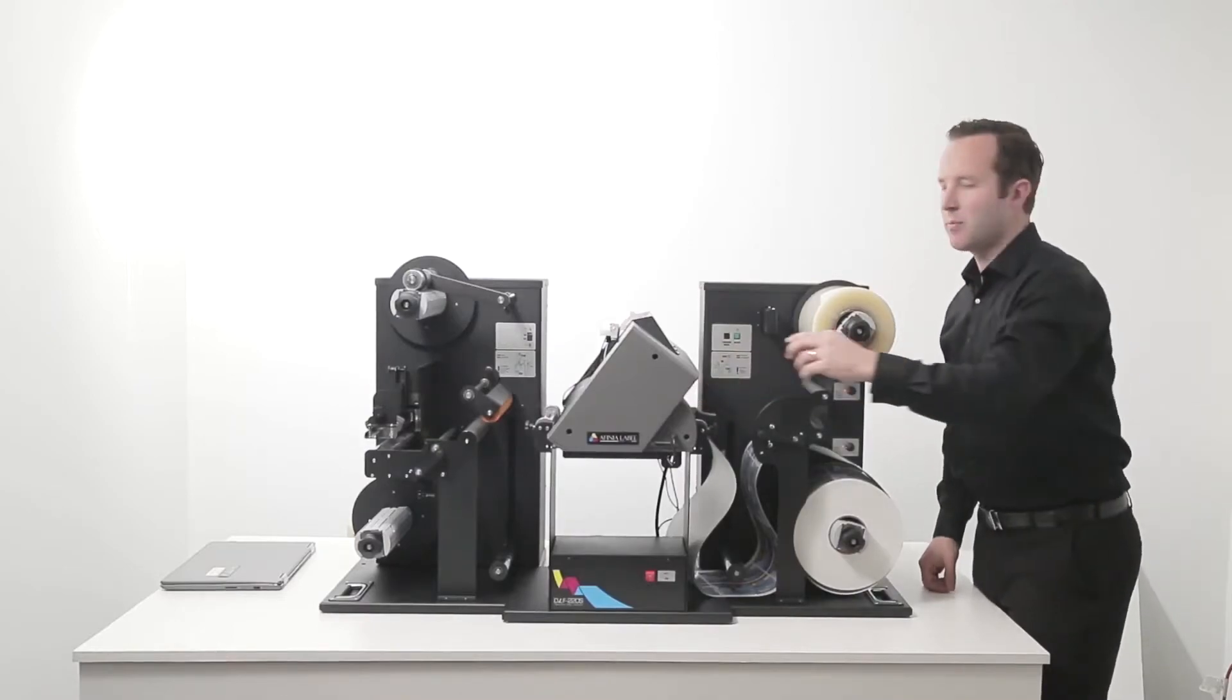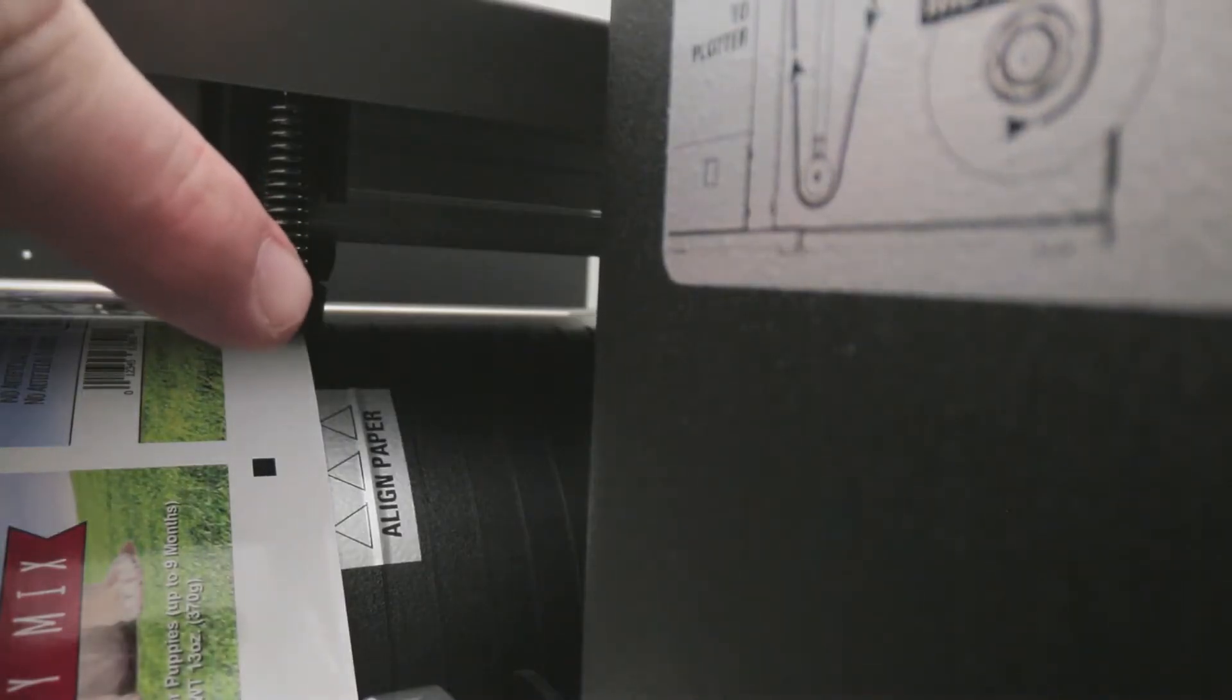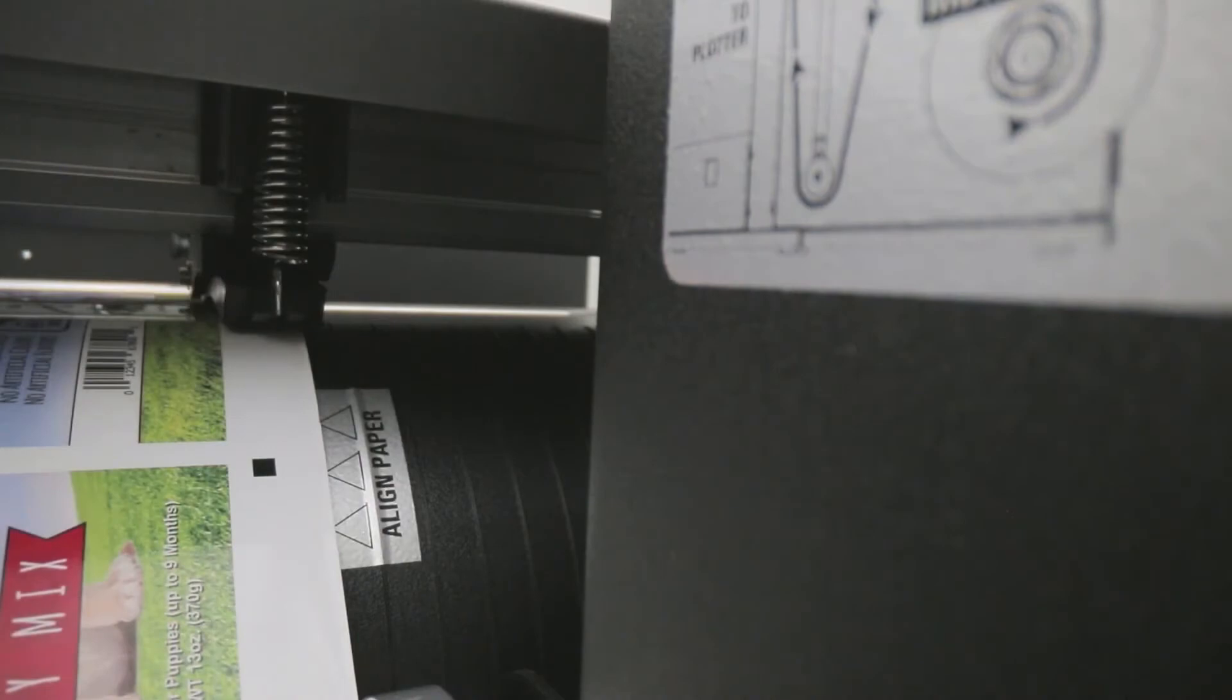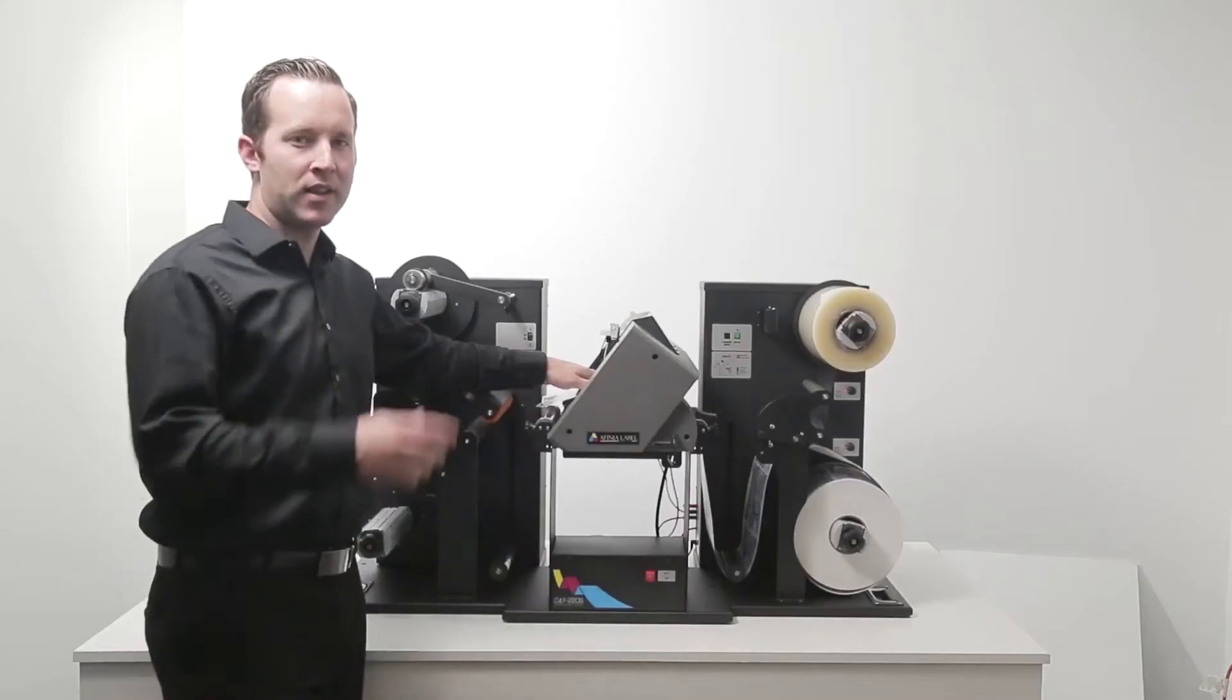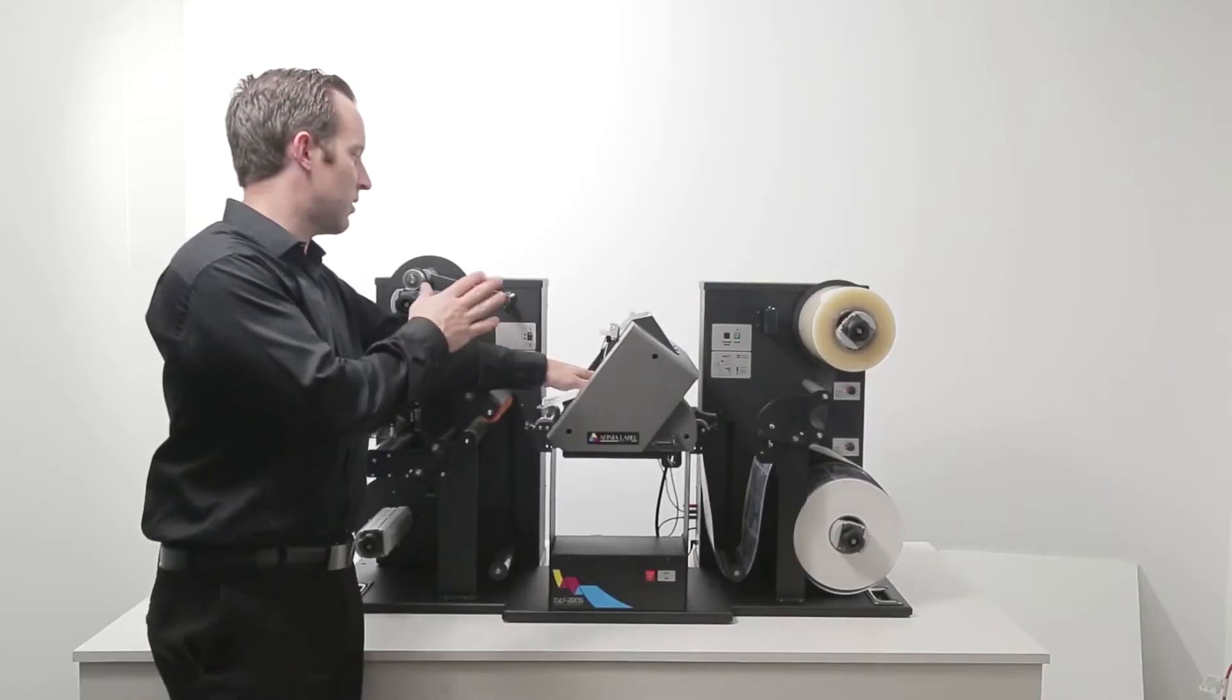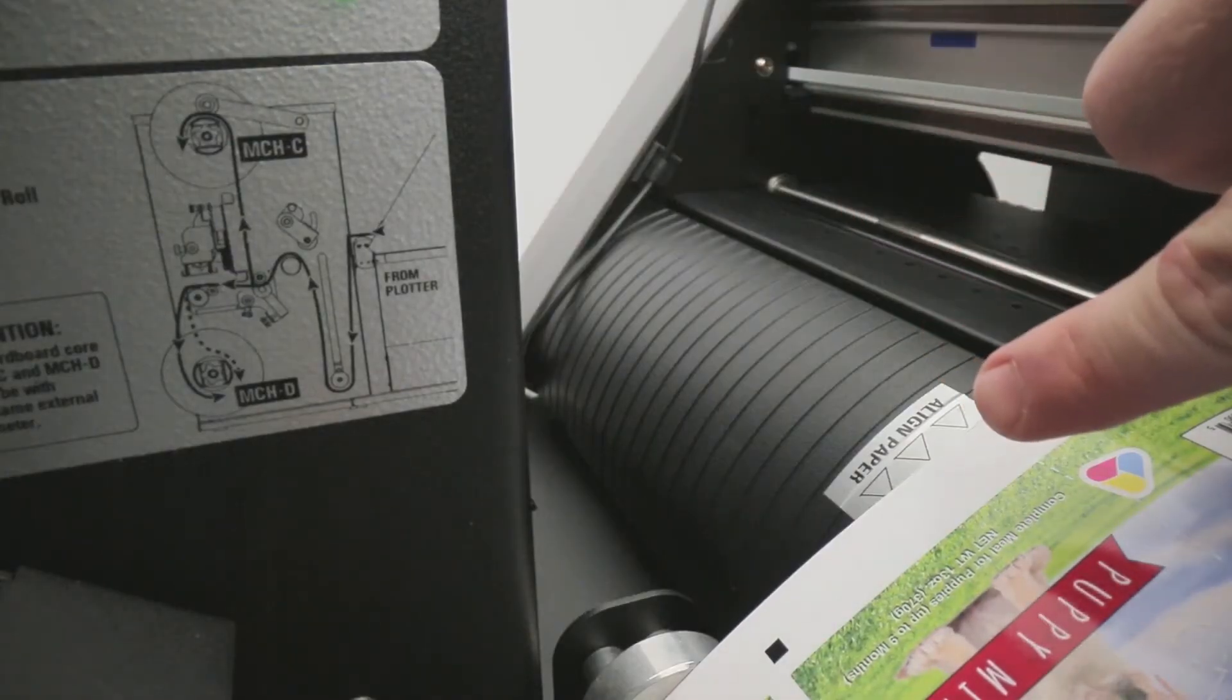Make sure you're lined up with the first paper alignment arrow as you feed it through the pinch rollers in the plotter. Now on the other side of the plotter, we'll make sure we're aligned with the second paper alignment arrow.